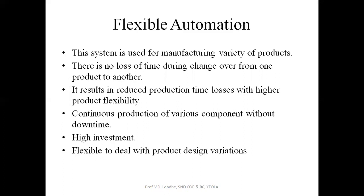The last type is flexible automation. As the word suggests, flexible means you can modify your process line and your product as per requirement. The flexible automation system is used for manufacturing a variety of products. There is no loss of time because changes are prepared ahead of time in the program. Changeover from one product to another is done in very little time, resulting in reduced production time losses with higher product flexibility.